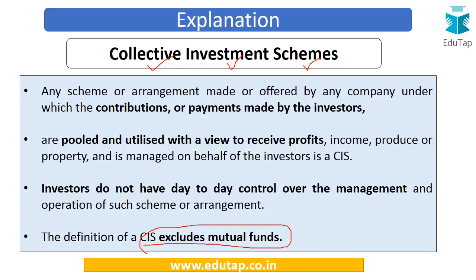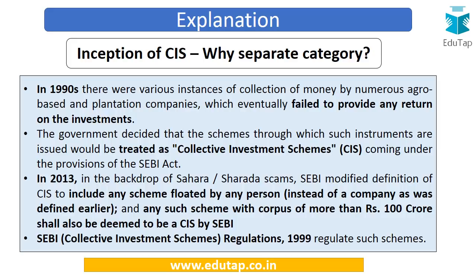To answer this, we must understand collective investment schemes. In a CIS, different sets of persons come together, make contributions and payments, and pool those to generate profits, income, or benefits such as property. This structure is managed on behalf of investors by a collective investment management company. Importantly, SEBI regulations specifically mention that collective investment schemes exclude mutual funds — they are different from mutual funds.